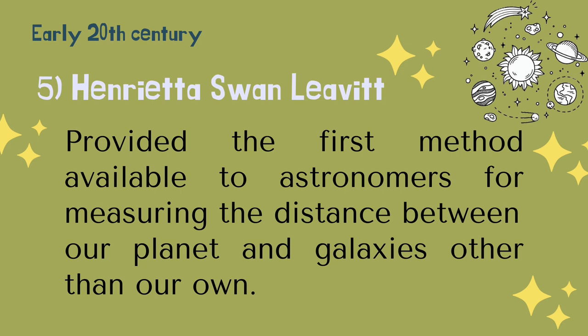In the early 20th century, Henrietta Swan Leavitt provided the first method available to astronomers for measuring the distance between our planet and galaxies other than our own. There is a correlation between the average brightness of certain variable stars called Cepheids and the periods of variation. Cepheids fluctuate in brightness over periods ranging from a day to several months, and Leavitt discovered that longer periods correspond with greater average brightness. Once the distance of a few nearby Cepheids was determined, the distance of any Cepheid could be computed from its average brightness and period of variation.